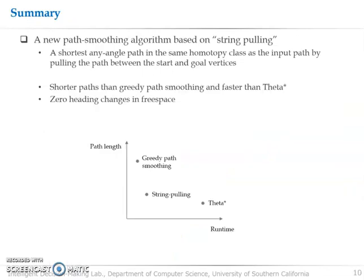In this paper, we developed a new path smoothing algorithm based on string pulling. It starts with an input grid path and pulls the input path as taut as possible. In experiments, the string pulling algorithm finds shorter paths than the grid path smoothing while running almost as fast as it, and compared to theta star, our algorithm can significantly reduce the runtime but obtains similar path length. In particular, the string pulling algorithm achieved zero number of heading changes in free space. This ends my presentation. Thank you.